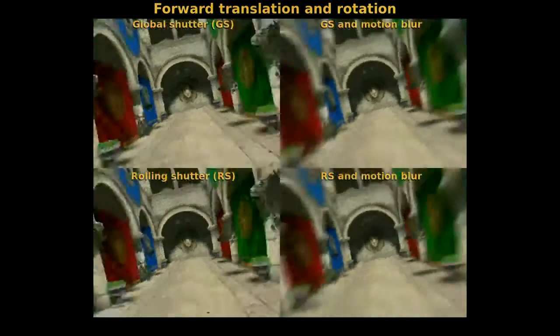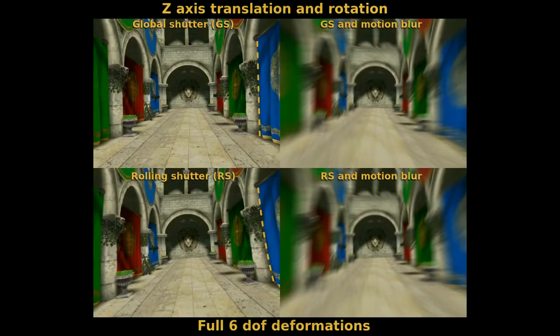This is a coupled rotation and translation around and along the z-axis. This produces a non-linear deformation in the image. Notice the curved line in the rolling shutter image compared to the ground truth.